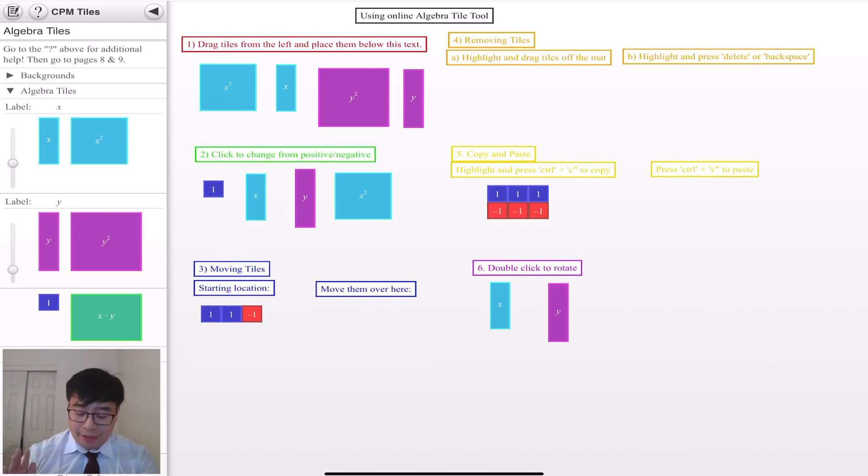The third thing, or sorry, the fifth thing you guys can do is copy and paste tiles. So if you guys go ahead and highlight these tiles, you guys can click Control C at the same time to copy them and then press Control V to paste and then move them where you want. Okay. So one more time, you guys can press Control C to copy and Control V to paste. Okay.